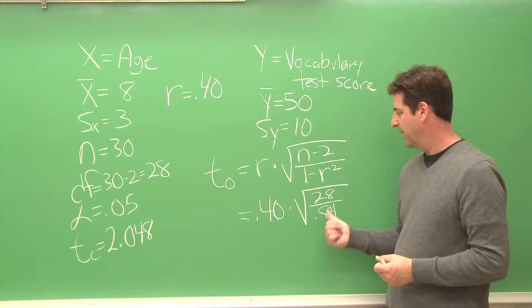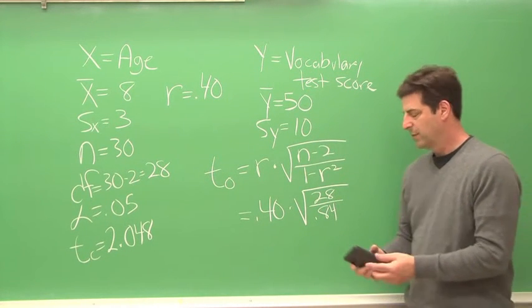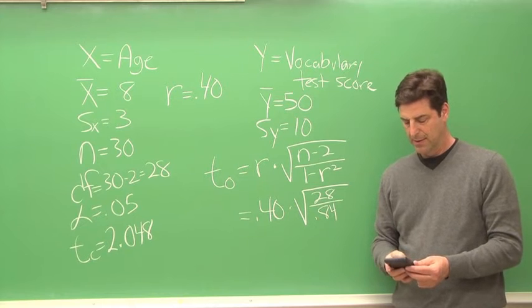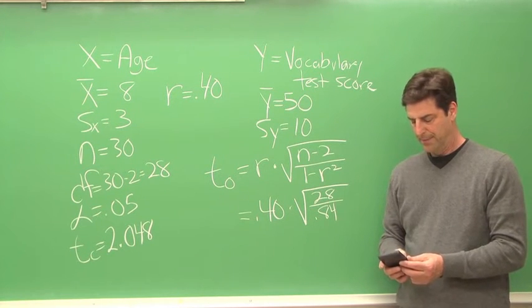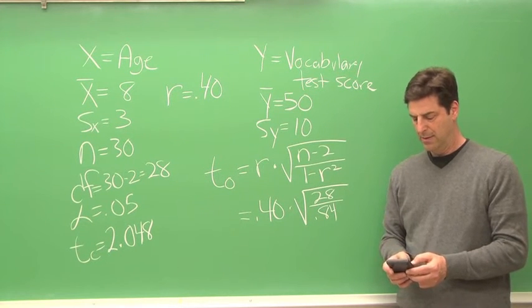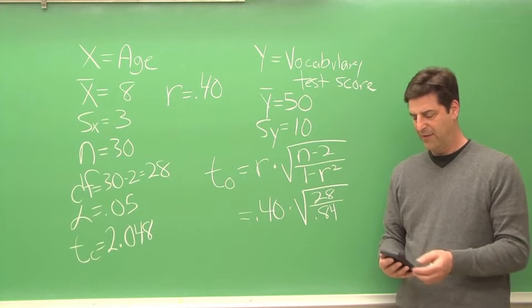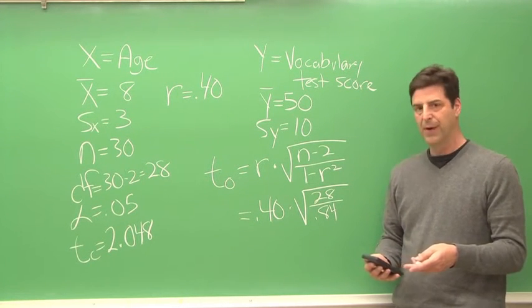Okay. So now that we have that, let's use our calculator, and we'll divide 28 by .84. And then we'll take the square root of that, and we get 5.77, and then we can multiply that by .40.